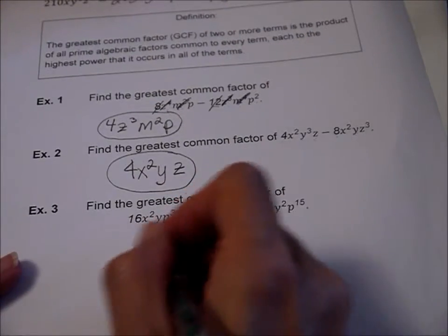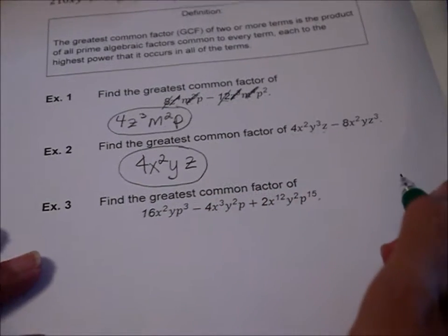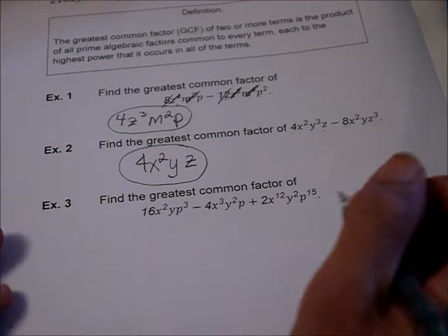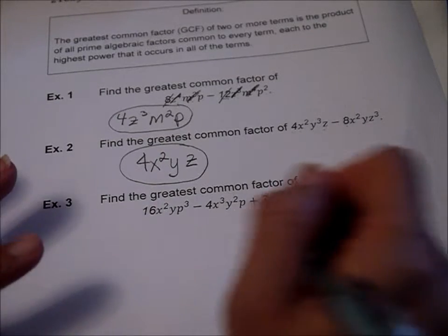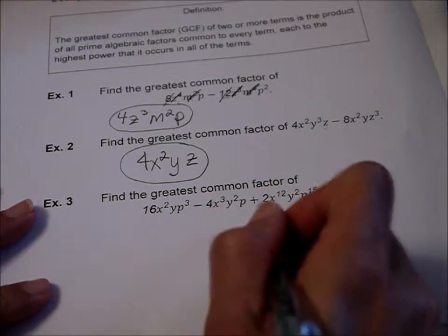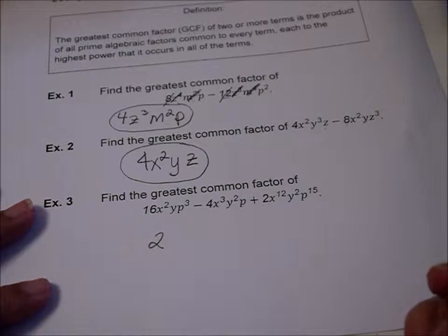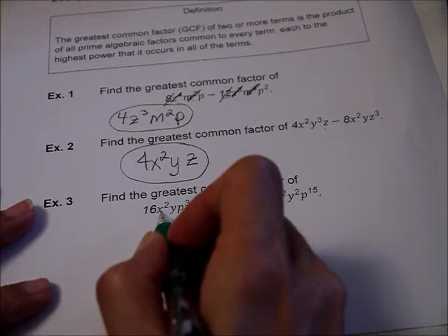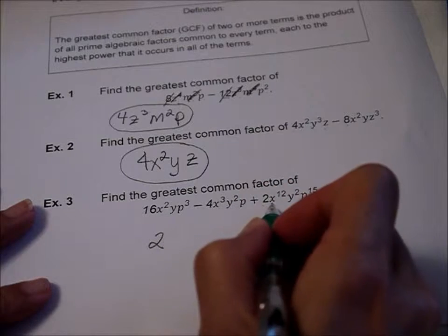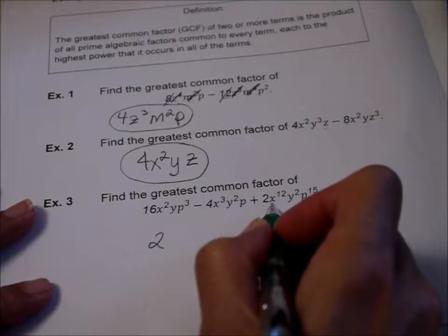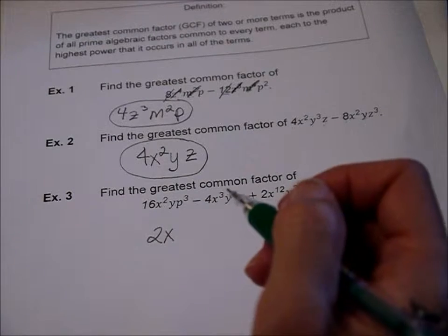Now we've got three terms, so you've got to look across three different ones, and so it just takes a little bit more. You have to be more careful. So we have a 16, a 4, and a 2. Well, 2 is the biggest thing that goes into all three of them. Then we look at our x's. We have x², x³, and x¹². So x² is the greatest one.